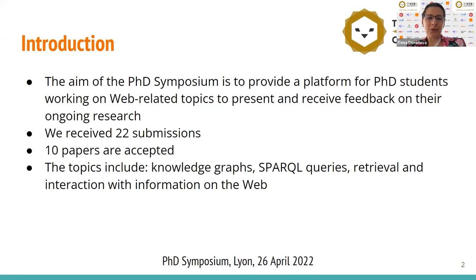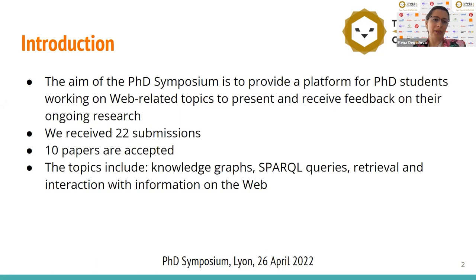We had to make very difficult choices. We received 22 submissions with interesting research, discussions and results and we couldn't accept everything, so we had to make some choices. We managed to accept 10 papers and the topics are related to the conference topics. They cover different aspects — we have papers on knowledge graphs, papers on SPARQL queries, on retrieval and interaction with information on the web. So we are looking very much forward to the exciting program today.